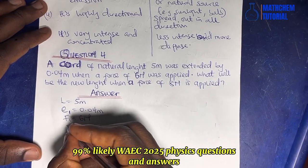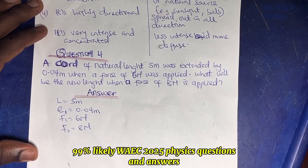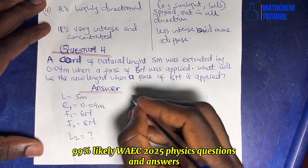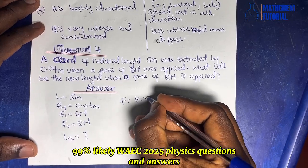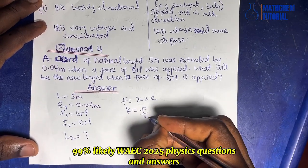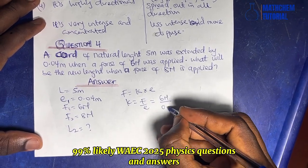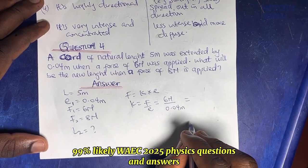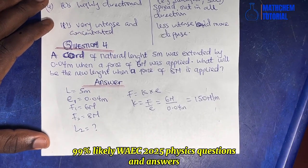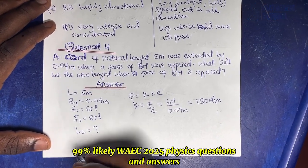We need to find L2, the new length. Using Hooke's Law: F = ke, so k = F/e = 6 / 0.04 = 150 N/m. Then finding the new extension with 8 N: e2 = F2 / k.